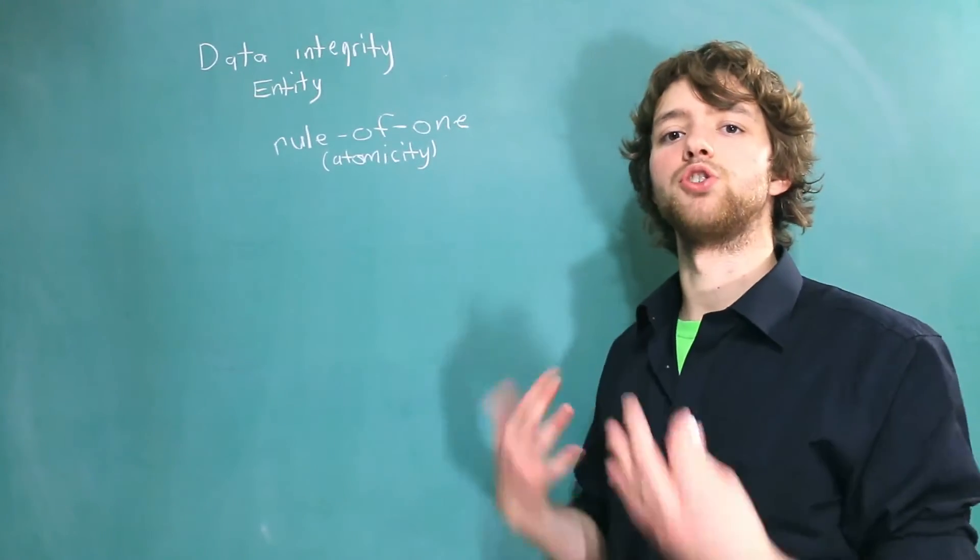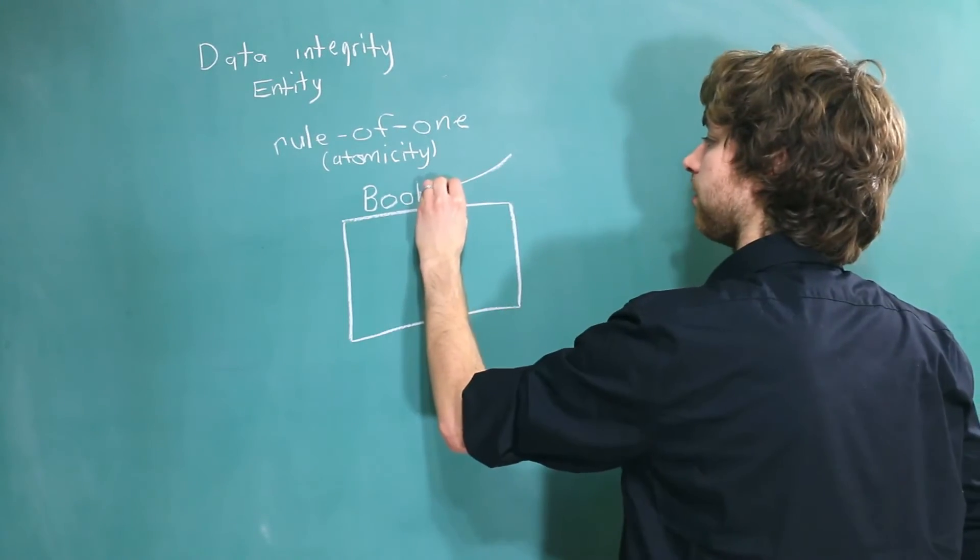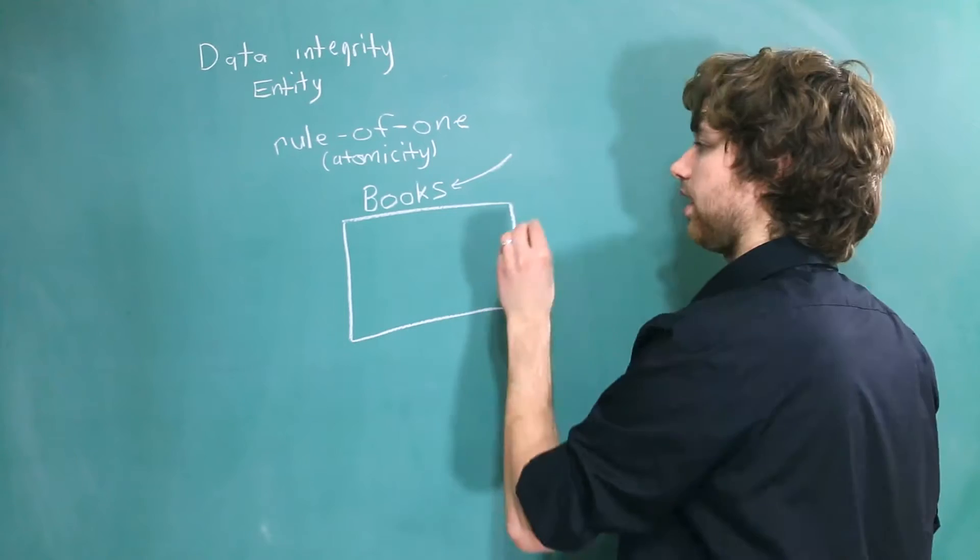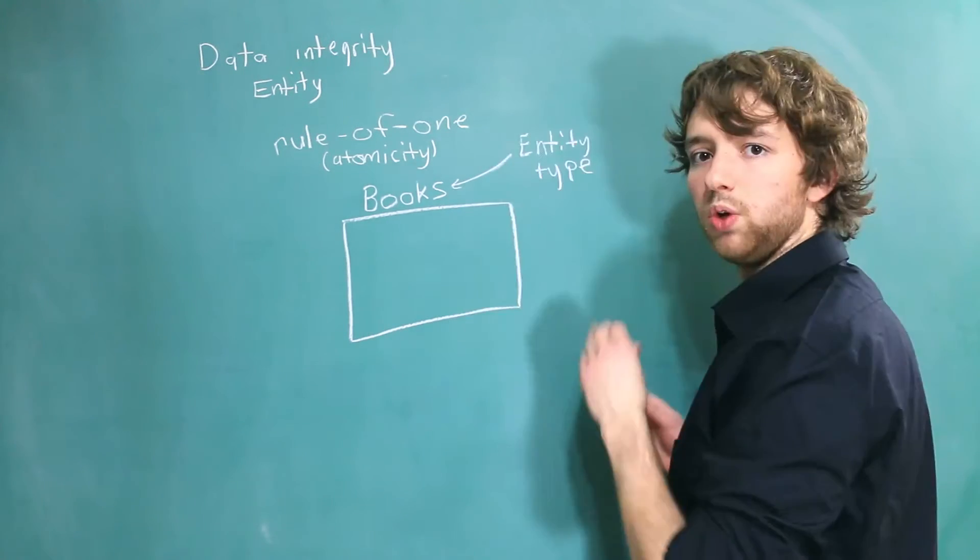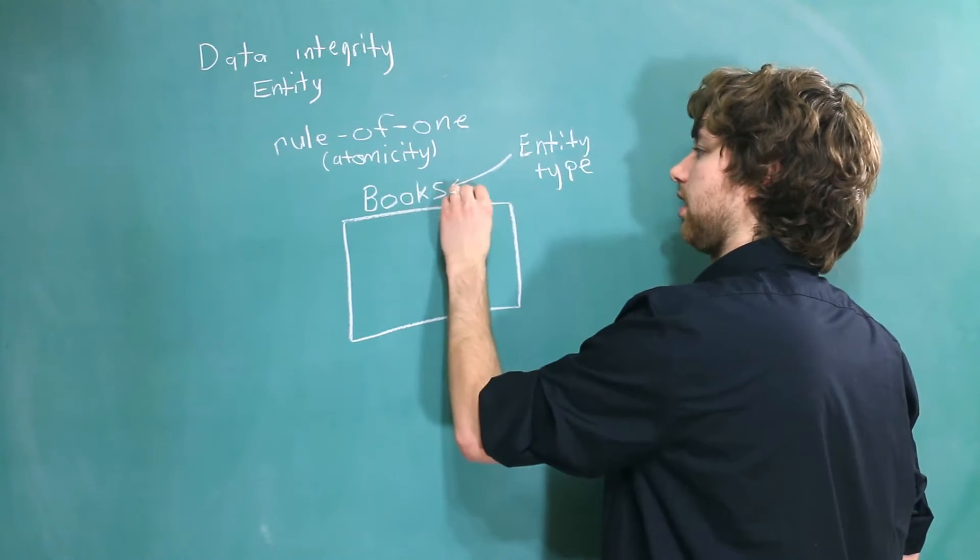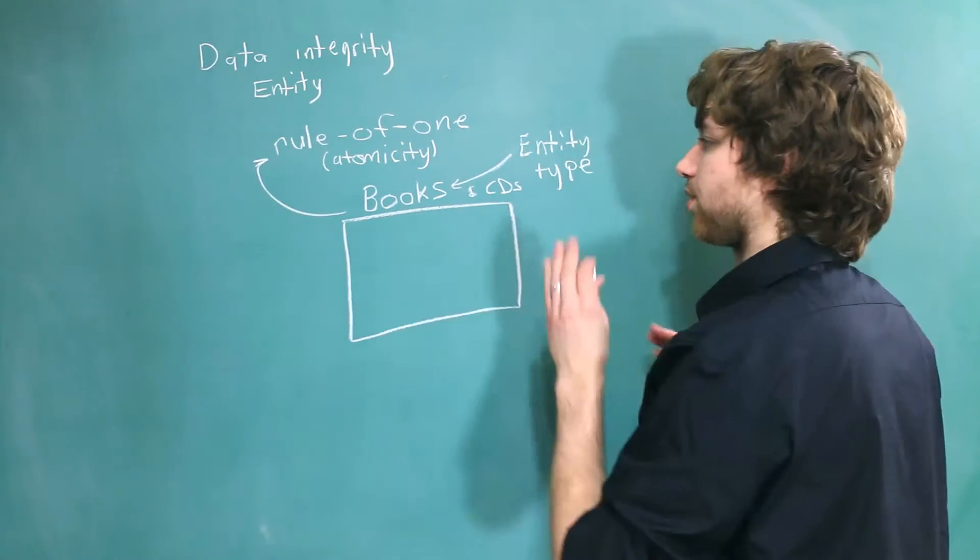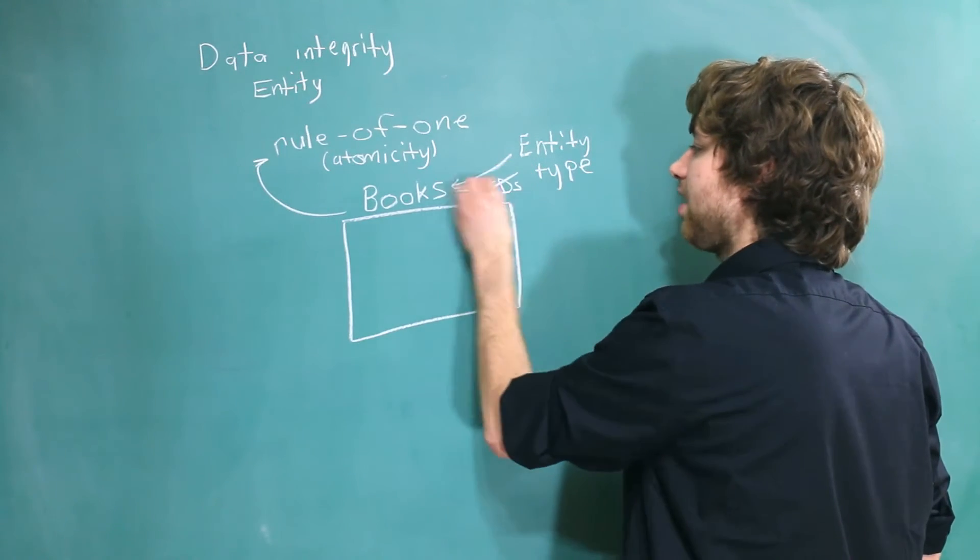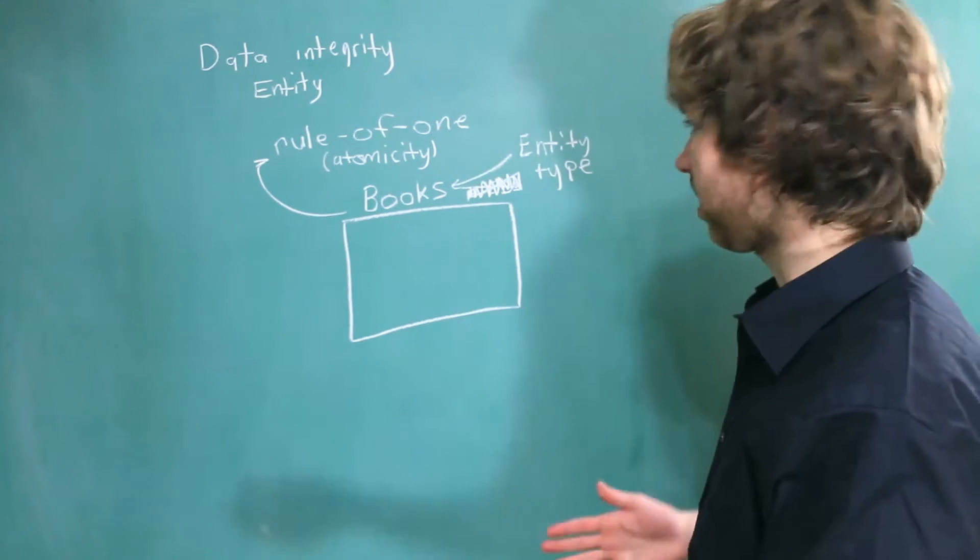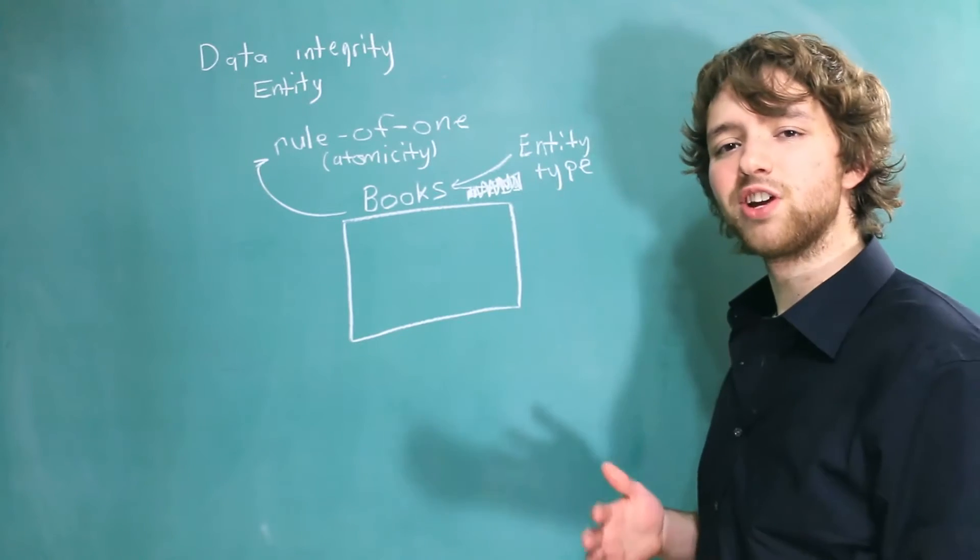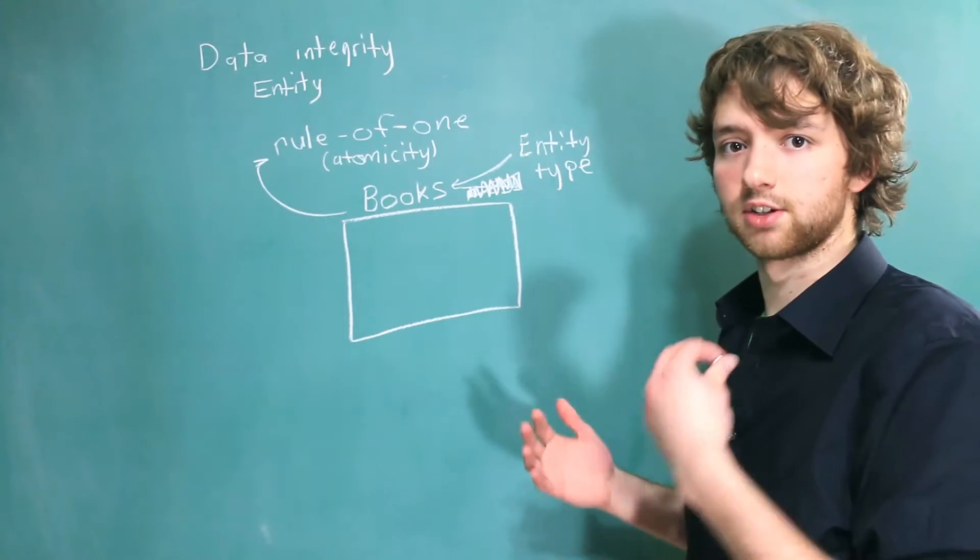Even if we have a table called books, even though it's plural, is describing one type of thing. This is known as the entity type. We wouldn't want this table to describe books and CDs. That would be breaking our rule of one. So that's the first thing we want to do. Get rid of anything that's breaking the rule of one. If you want to store CDs, that's fine, just put it in a different table. But in general, if we get more specific, it's a little bit easier to work with the data, because we know all the data is describing books.